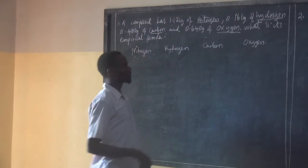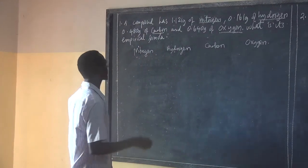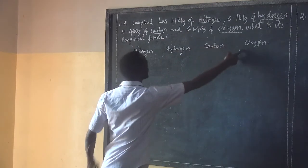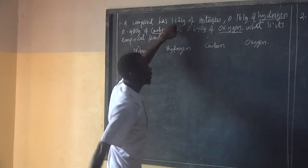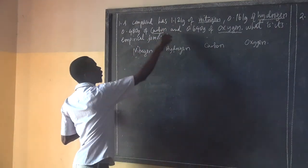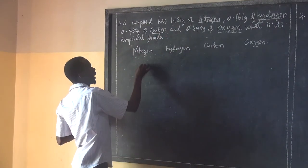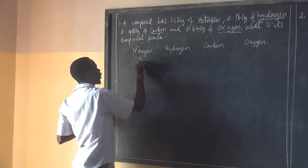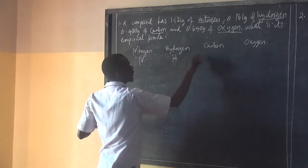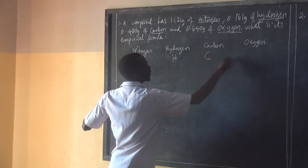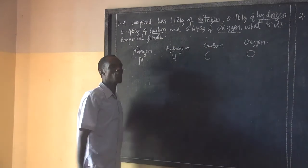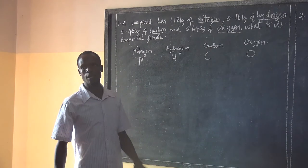The composition of this compound depends on the mass. The mass constituents are nitrogen, hydrogen, carbon and oxygen — those are the symbols of those elements.